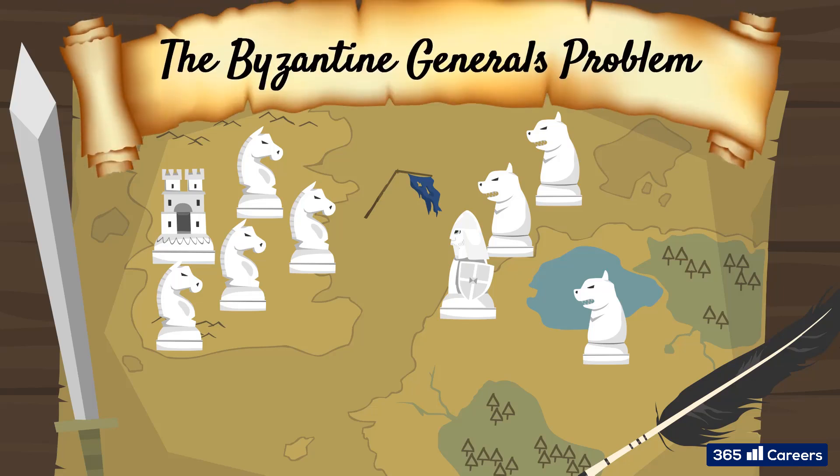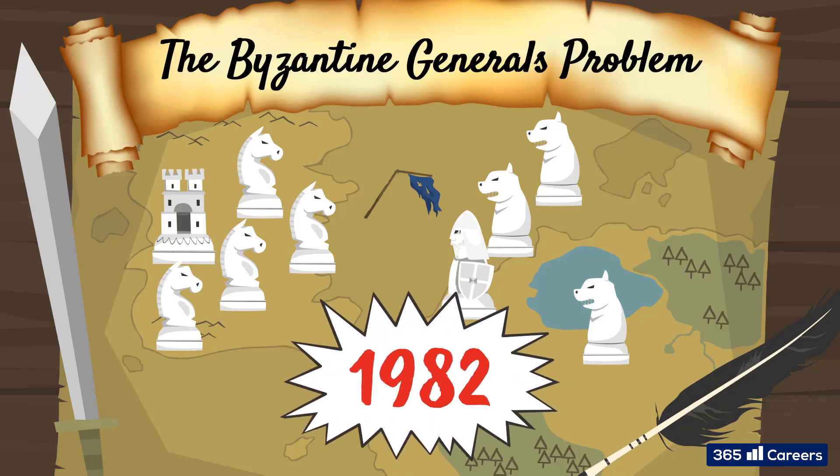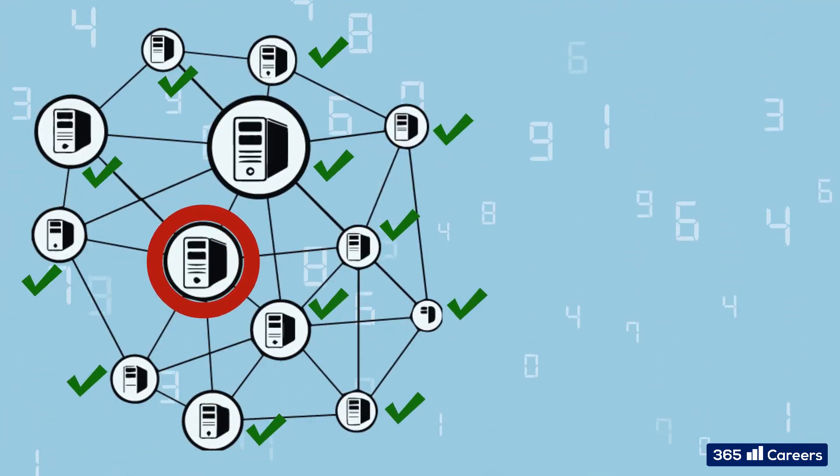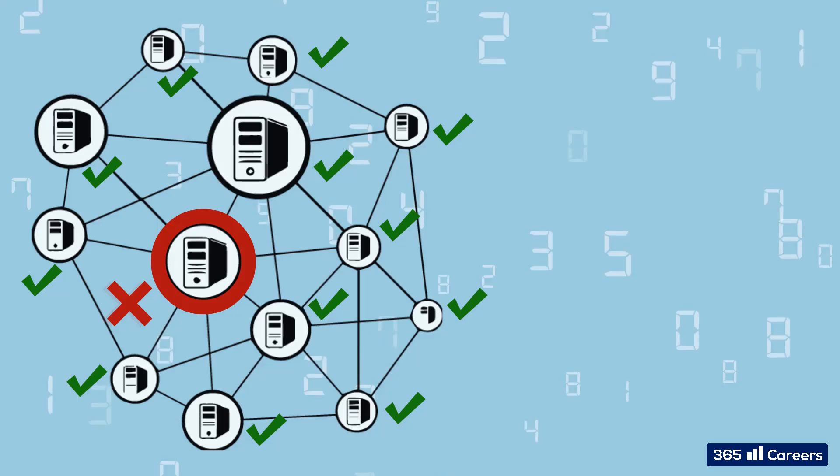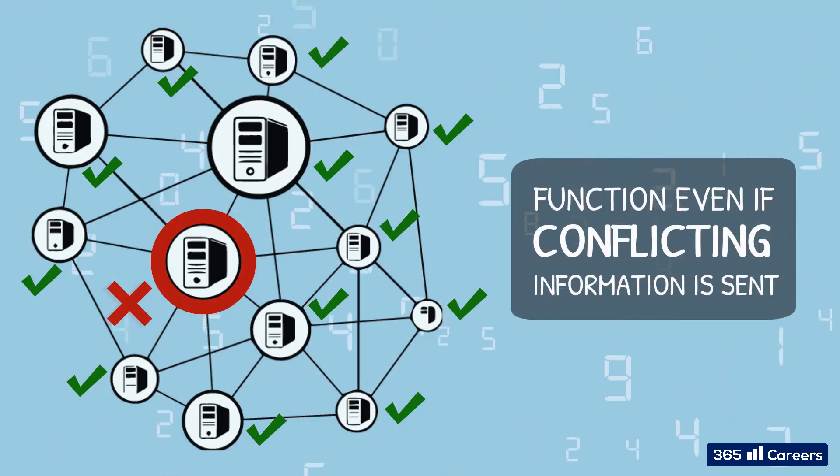The Byzantine Generals Problem was first introduced in a computer science paper published in 1982. The problem discussed in the paper is that reliable computer systems must be able to function effectively in the presence of faulty components that may send conflicting information to different parts of the system.